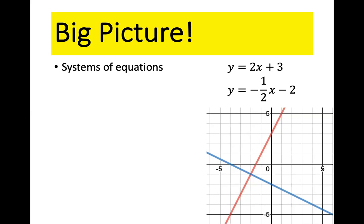What we're interested in is the one point the two lines have in common. That point is (−2, −1) — it makes both equations true simultaneously, and it's the only point that does. When you solve a system of linear equations, that's what you're looking for. Today we're going to solve it algebraically rather than graphically.